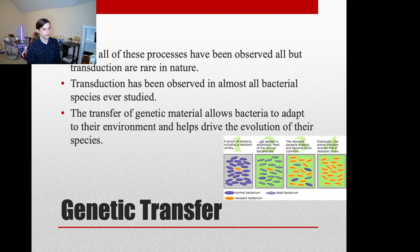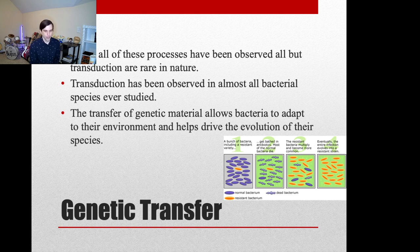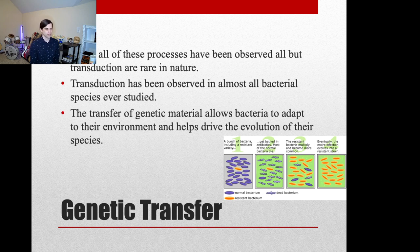All three mechanisms — transformation, transduction, and conjugation — have been observed in nature and in the lab, and they all lead to different outcomes. These are what drive bacterial evolution, and different types of mutations and horizontal gene transfer have led to our antibiotic resistance problems today. A lot of this chapter is review, so I'll link those videos below for DNA replication and related topics. If you have any questions, please let me know — have a great rest of your week.